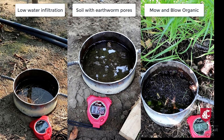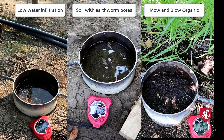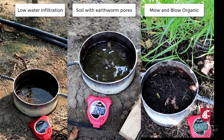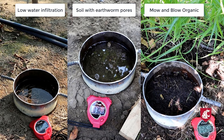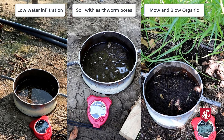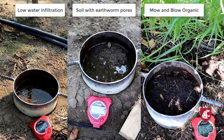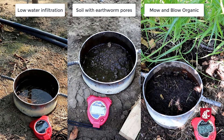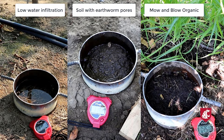Management practices in orchards can impact soil structure. For example, in this soil at right, the tree row is mowed and mulched and soil organisms have created good soil structure. In the center panel, plentiful earthworms have created channels for water infiltration. In the left panel, surface compaction is likely limiting water infiltration and likely root growth.